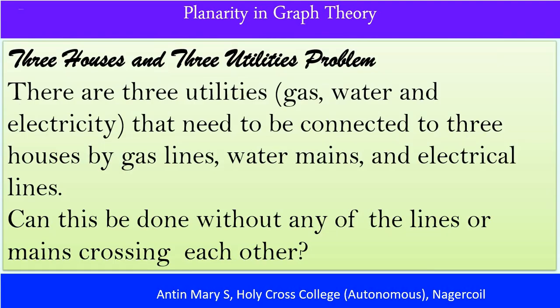Here we deal with K3,3, the complete bipartite graph. This is the three houses and three utilities problem. There are three utilities—gas, water, and electricity—that need to be connected to three houses. Gas, water, and electricity need not be adjacent to each other, and the three houses need not be linked to each other. We consider this as a bipartite set: three houses and another partite set of gas, water, and electricity.